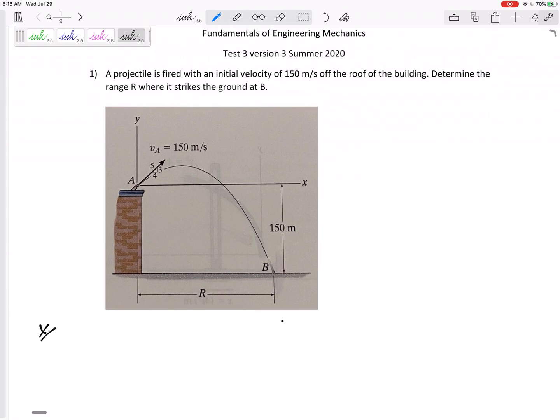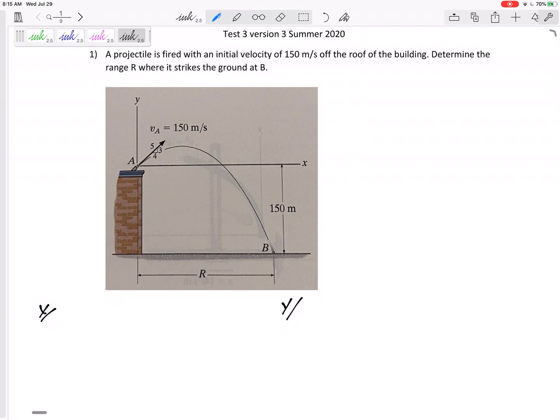For projectile problems, I like to separate x from y motion because they're kind of independent from each other. X motion has no acceleration; y motion has acceleration down, acceleration due to gravity. For projectiles, that's the only acceleration we have. In the x, your book would write SF equals SI plus VIT. I go ahead and write this one half AT squared because that is our constant acceleration equation, even though acceleration is zero.